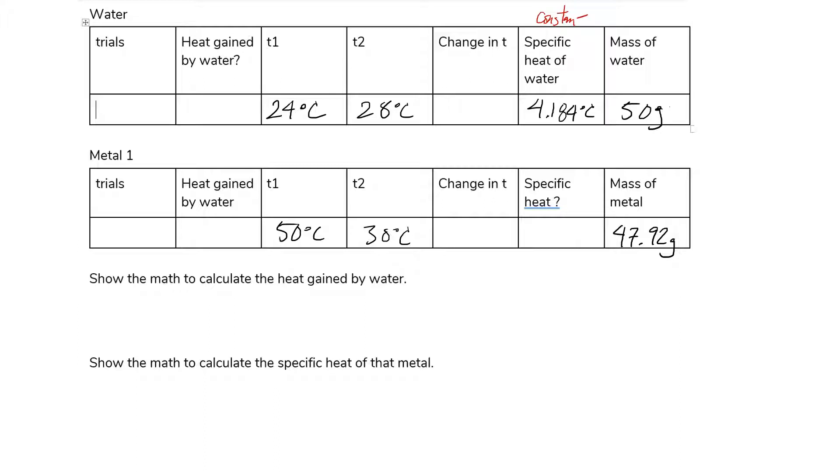I didn't look this up in lab, I just know that water always has a specific heat of 4.184 joules per gram Celsius. I put the wrong units there.